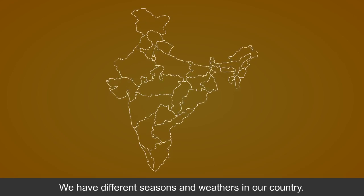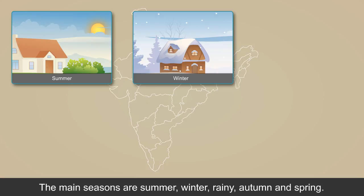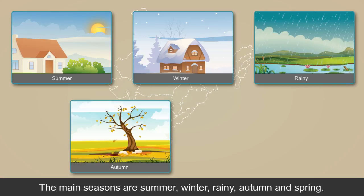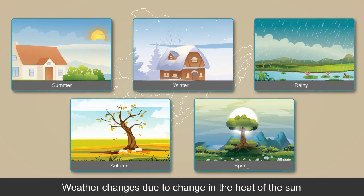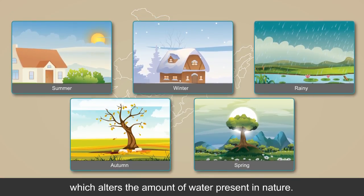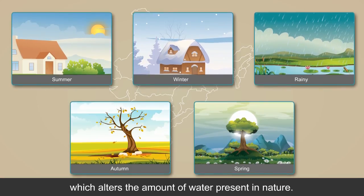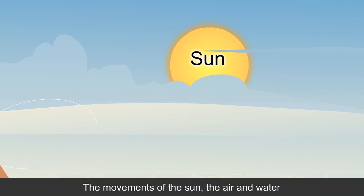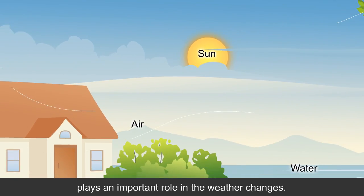We have different seasons and weathers in our country. The main seasons are summer, winter, rainy, autumn and spring. Weather changes due to change in the heat of the sun, which alters the amount of water present in nature. The movements of the sun, air and water play an important role in weather changes.